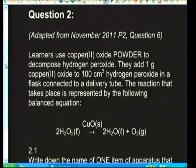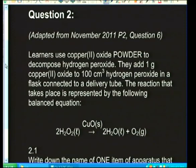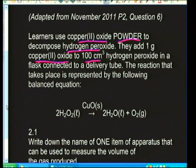Welcome back, grade 12s. We're busy with rates of reaction and moving on to a really popular type of question where examiners ask about the investigative process using a typical reaction where variables are changed. Question 2, from the November 2011 paper 2: learners use copper(II) oxide powder to decompose hydrogen peroxide. They add 1 g of CuO to 100 cm³ of hydrogen peroxide in a flask connected to a delivery tube. The balanced equation represents the reaction.